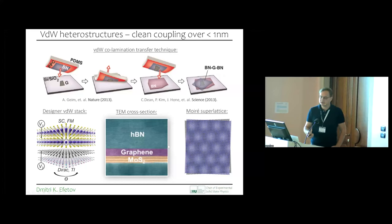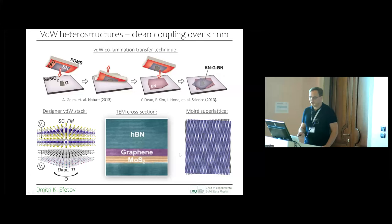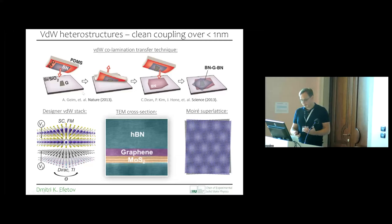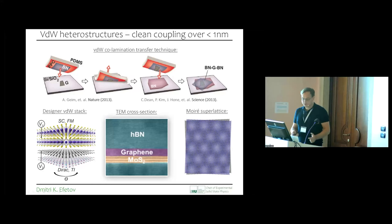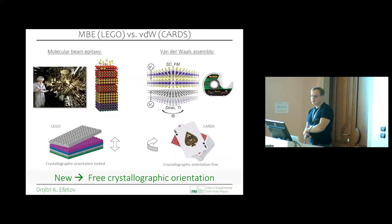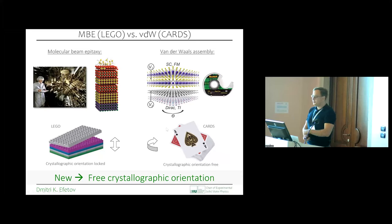The third trick that makes these materials so interesting — and this will be the main part of my talk — is that you can create these moiré superlattices. Starting with two-dimensional materials, you can define any given crystallographic orientation between the two crystals to create this interference pattern. I want to highlight this particular capability in contrast to more traditional techniques developed over the years.